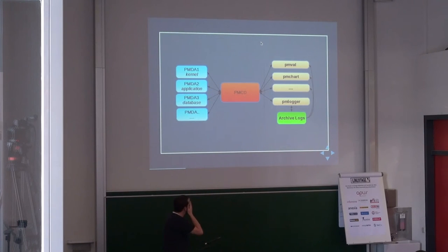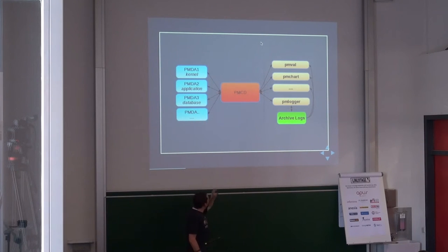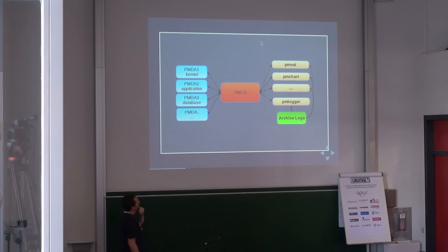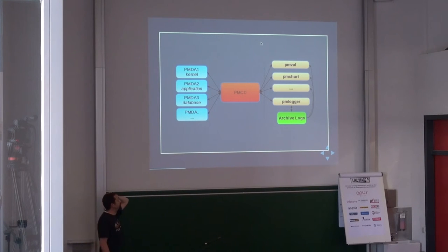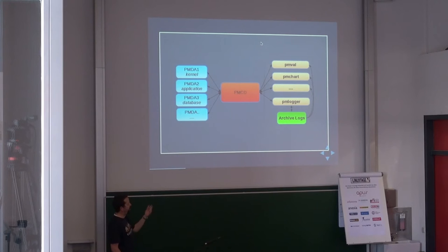This is, in one single image, the architecture of a typical Performance Co-Pilot system. You have the main service PMCD, which runs on a specific system. On the right side, the dotted line represents that it could be a network — clients can be remote. You can speak to PMCD over the network or on the local host via Unix socket. You have a bunch of applications on the right using different APIs provided by the framework. PMVal is a CLI tool that queries specific metrics and prints them on screen.